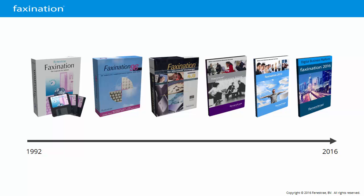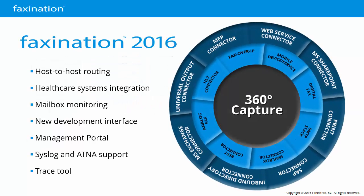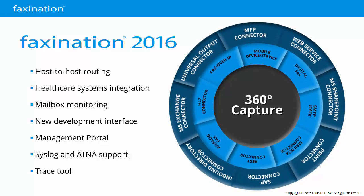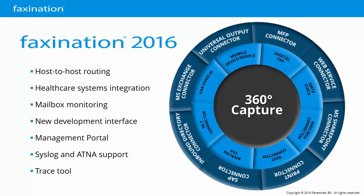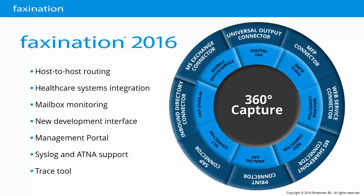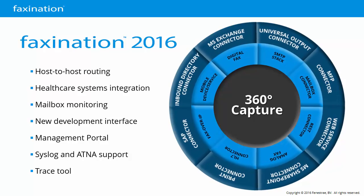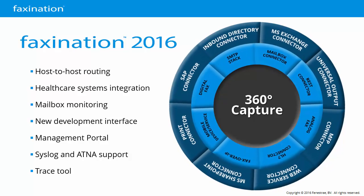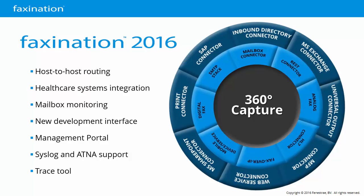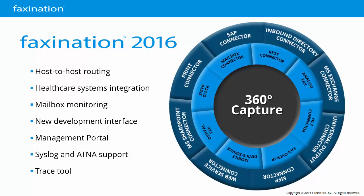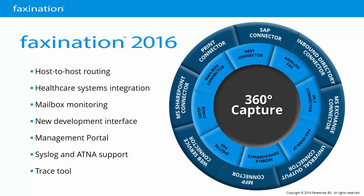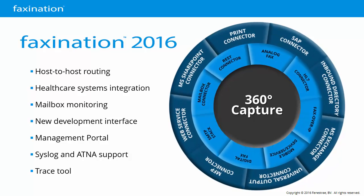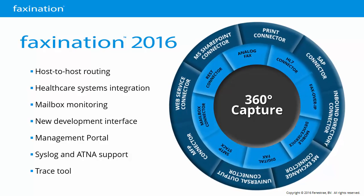FaxNation 2016 is a significant leap forward and adds a lot of capabilities and value to our software. FaxNation 2016 introduces host-to-host routing, something our marketing team refers to as 360 Capture. This technology expands the capabilities of FaxNation well beyond that of a typical fax server, providing intelligent document routing and automated digital document workflows. This also opens the door for new FaxNation customers that wouldn't normally have the messaging volume to justify a fax server, but can benefit from the document routing and workflow features. We'll be exploring all of these capabilities in detail during this training.